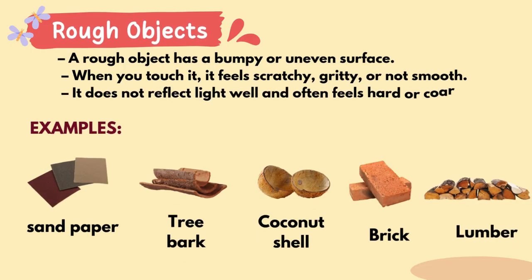Rough Objects. A rough object has a bumpy or uneven surface. When you touch it, it feels scratchy, gritty, or not smooth. It does not reflect light well and often feels hard or coarse. Examples: sandpaper, tree bark, coconut shell, brick, and lumber.